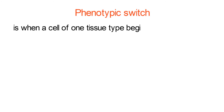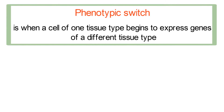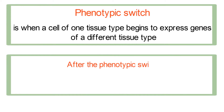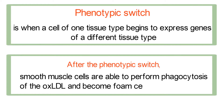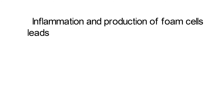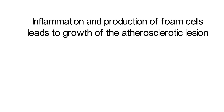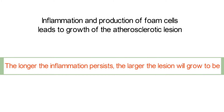A phenotypic switch is when a cell of one tissue type begins to express genes of a different tissue type. After the phenotypic switch, smooth muscle cells are able to perform phagocytosis of the ox-LDL and become foam cells themselves. Thus, inflammation and production of foam cells leads to growth of the atherosclerotic lesion. The longer the inflammation persists, the larger the lesion will grow to be.